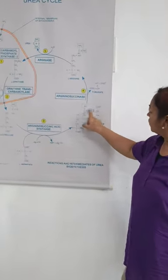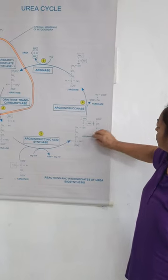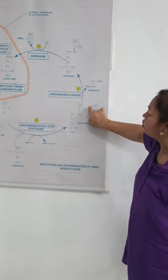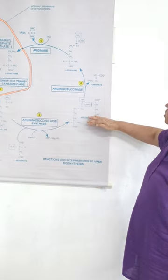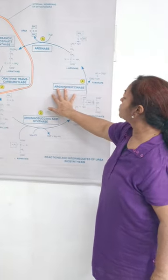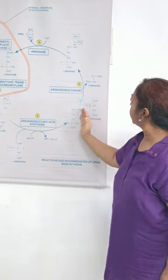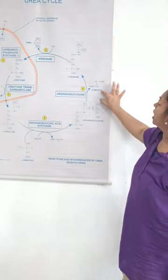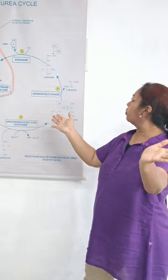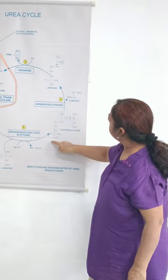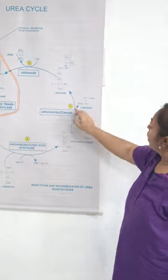You can clearly see the attachment here. The citrulline moiety remains largely the same, but the L-aspartate unit gets attached with the removal of a water molecule to form argininosuccinate. In the presence of the enzyme argininosuccinase, argininosuccinate is divided into two parts: fumarate is separated on one side, and L-arginine is formed on the other.